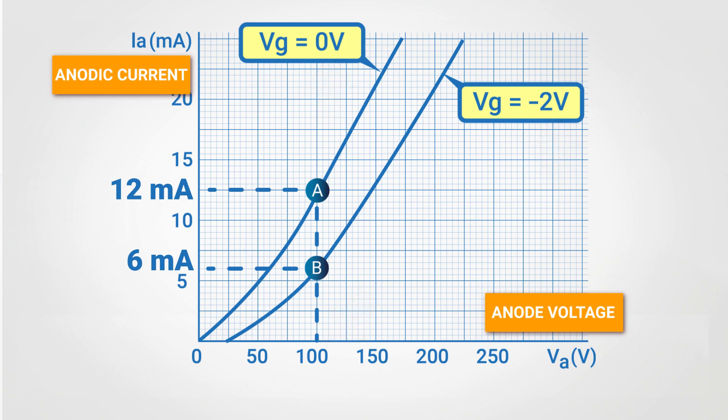However, the anodic current can be reduced in the opposite way, by changing the anode voltage and leaving the 0V grid voltage unchanged. In this case, the triode shall operate under point C condition, in which the anodic current is 6mA and the grid voltage is 0V. In this scheme, we can see that this can be achieved by reducing the anode voltage from 100V to 60V. Quite a big variation, don't you think?